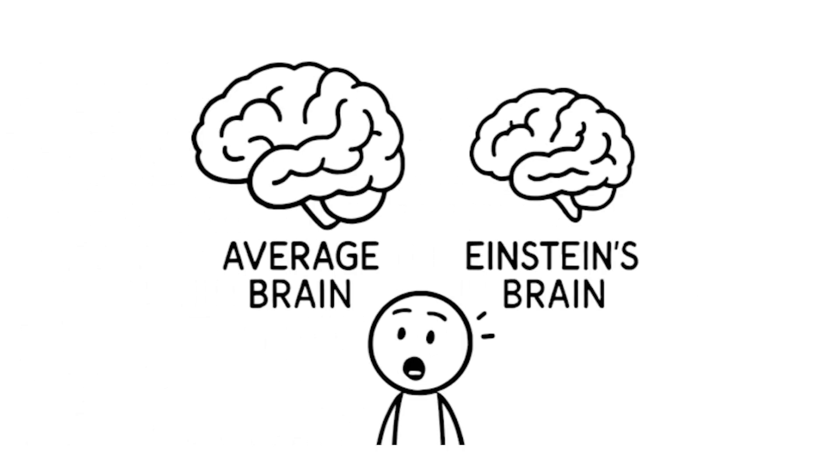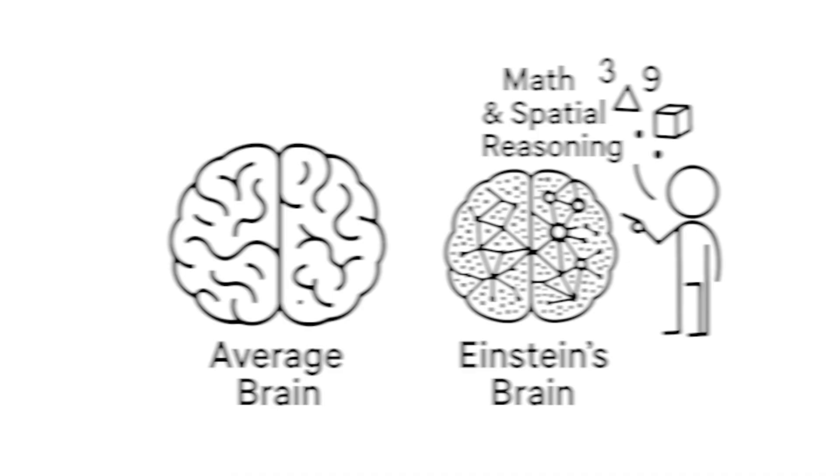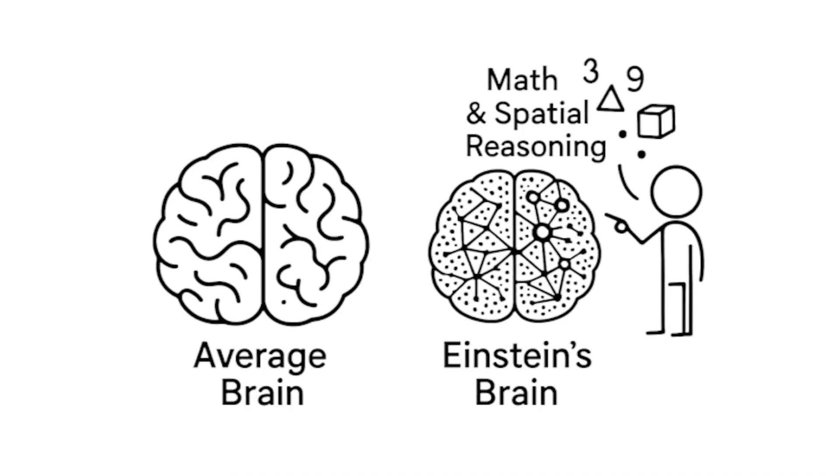Einstein's brain was actually 10% smaller than average, but post-mortem analysis showed he had more glial cells and denser neural connections in areas associated with mathematical and spatial reasoning.